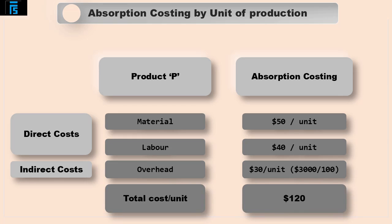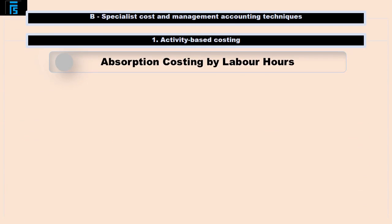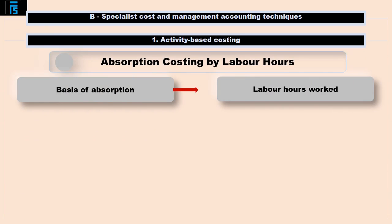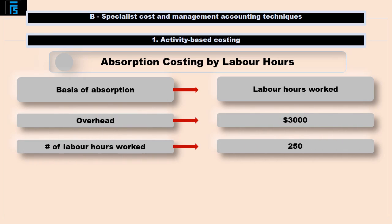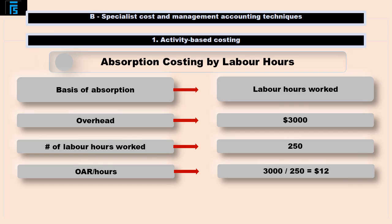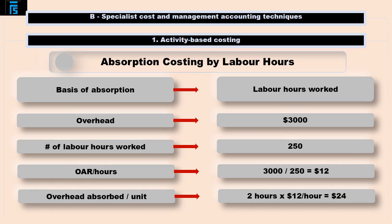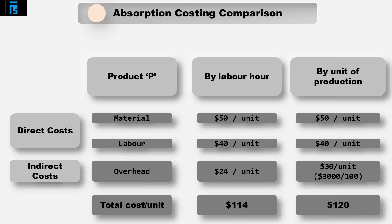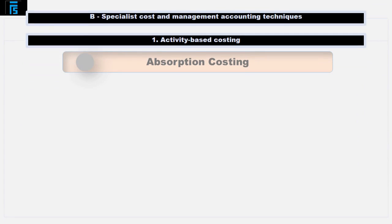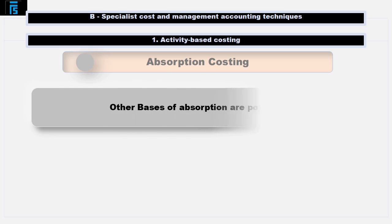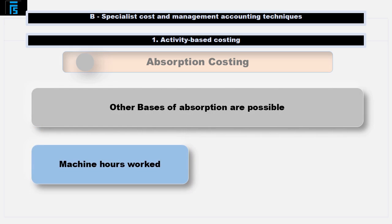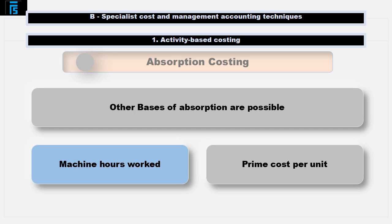Total cost per unit of P now equals $120. Company A may have decided to absorb its overhead based on the number of labour hours worked. So, if 250 labour hours had been worked in the period, then the overhead would be absorbed at the rate of $12 per labour hour. If each unit of Product P required 2 labour hours, the overhead absorbed by each unit would be $24, being 2 hours multiplied by $12 per hour. Total cost per unit of Product P now equals $114. Under absorption costing, other bases such as machine hours or prime cost could also be used.